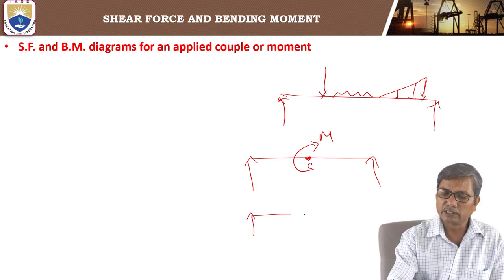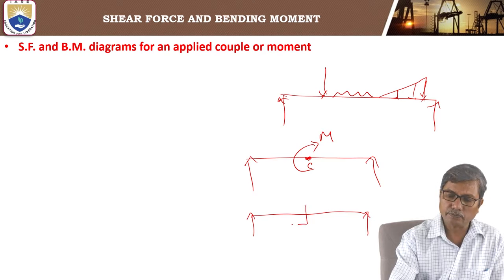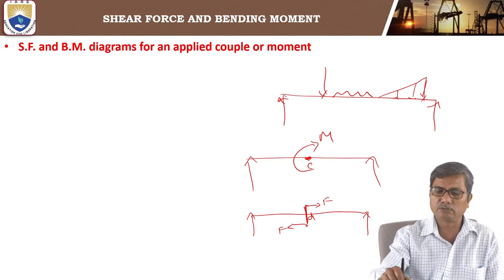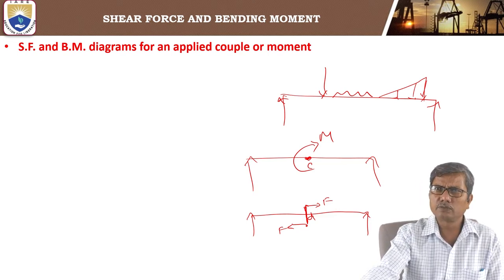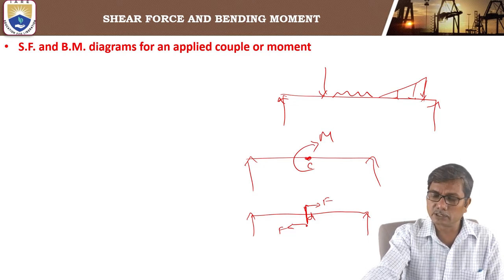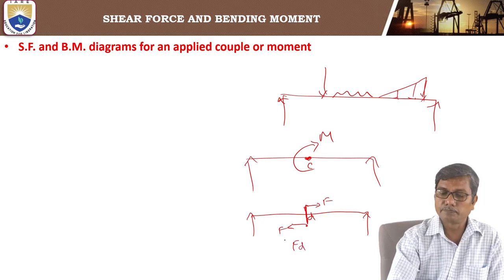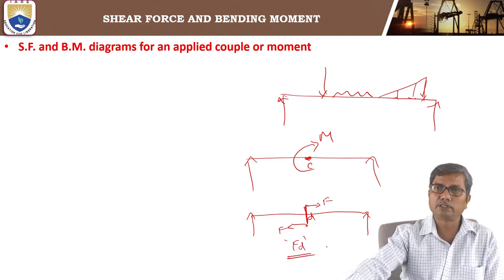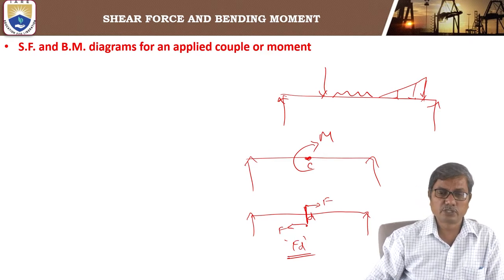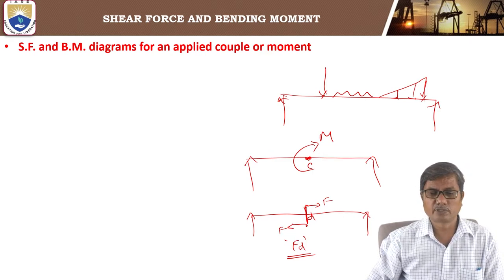When a couple is applied, couple means two equal and opposite forces separated by a small distance d. They produce a moment equal to Fd — the magnitude of the force multiplied by the distance between the forces. A couple means nothing but a moment. Let us see the shear force and bending moment diagrams for an applied couple or moment.